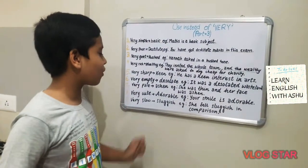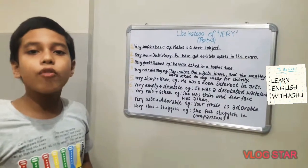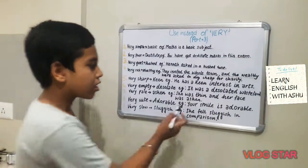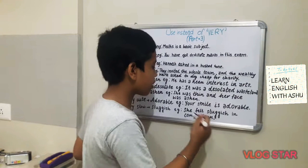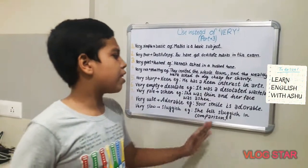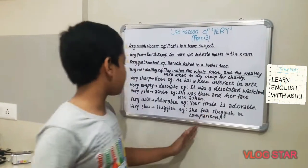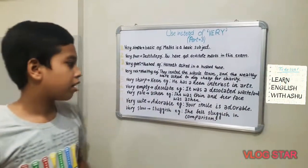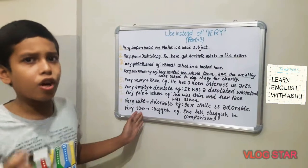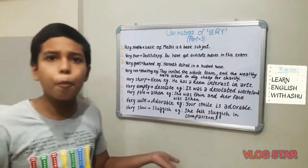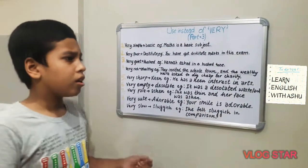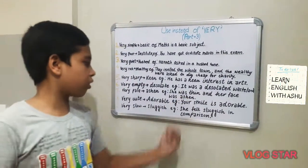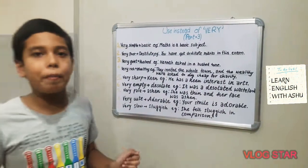Our next word is 'very slow.' Instead of very slow, we can say 'sluggish.' For example, she felt sluggish in comparison — it means she felt very slow in comparison between those two people.